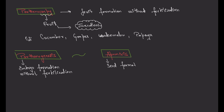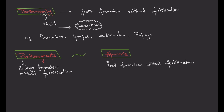Apomixis means seed formation without fertilization. Within the seed, the embryo is present, so apomixis involves embryo formation without fertilization as well. Since seeds are forming without fertilization, the characters are not going to segregate, because the characters are not coming from two parents — they come directly from one single parent, so meiosis is not happening.